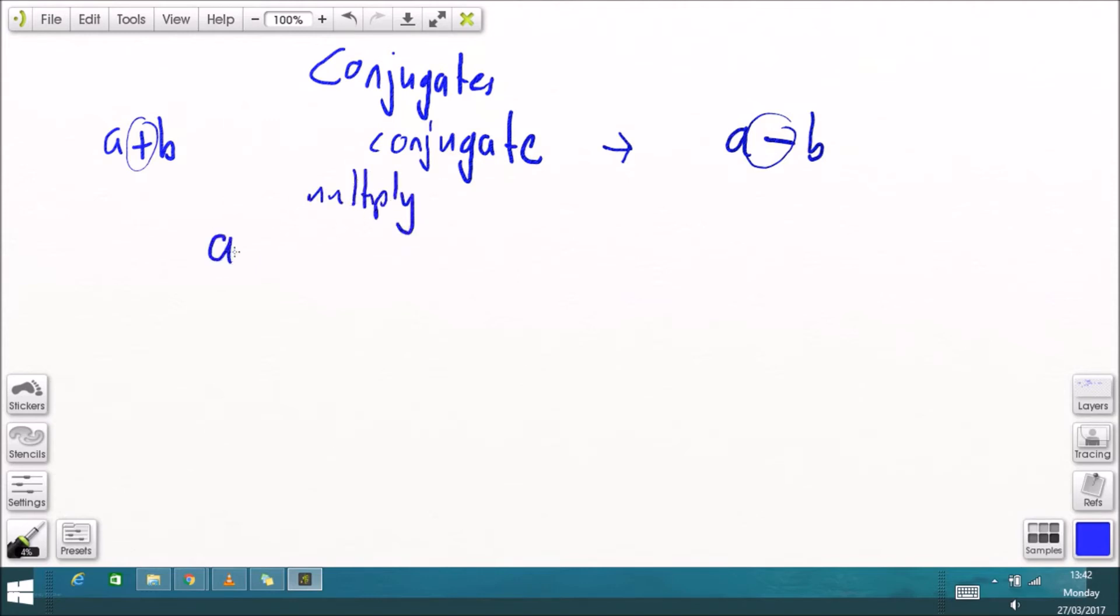the reason we want the conjugate is best seen by multiplying the two together to see how it helps you simplify, a plus b times its conjugate a minus b gives you this expression here where the two mixed terms cancel off